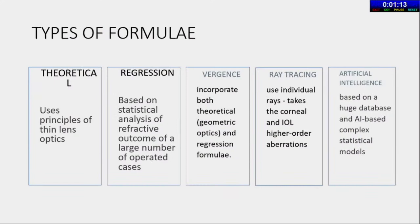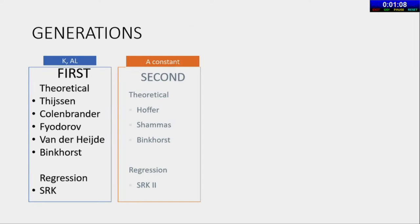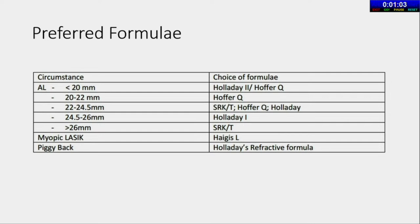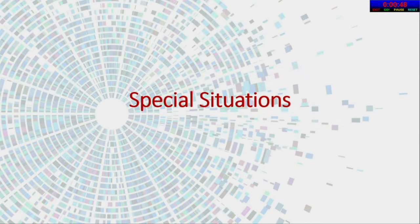Regarding calculation formulas, there are multiple formulas. The key preferred formulas to remember: when axial length is less than 22 mm, the preferred formula is HOFOQ; more than 22 mm, the preferred formula is SRKT. In a myopic LASIK patient, the Haigis-L formula is most preferred. When doing a piggyback IOL, use the Holladay refractive formula.